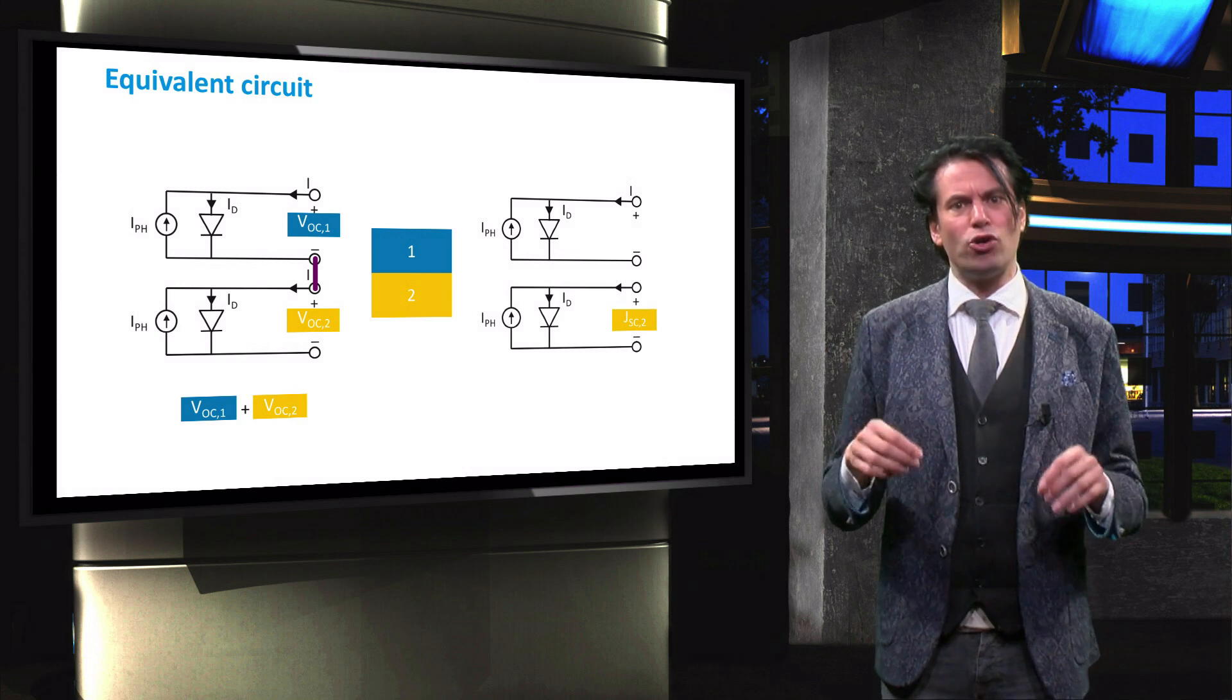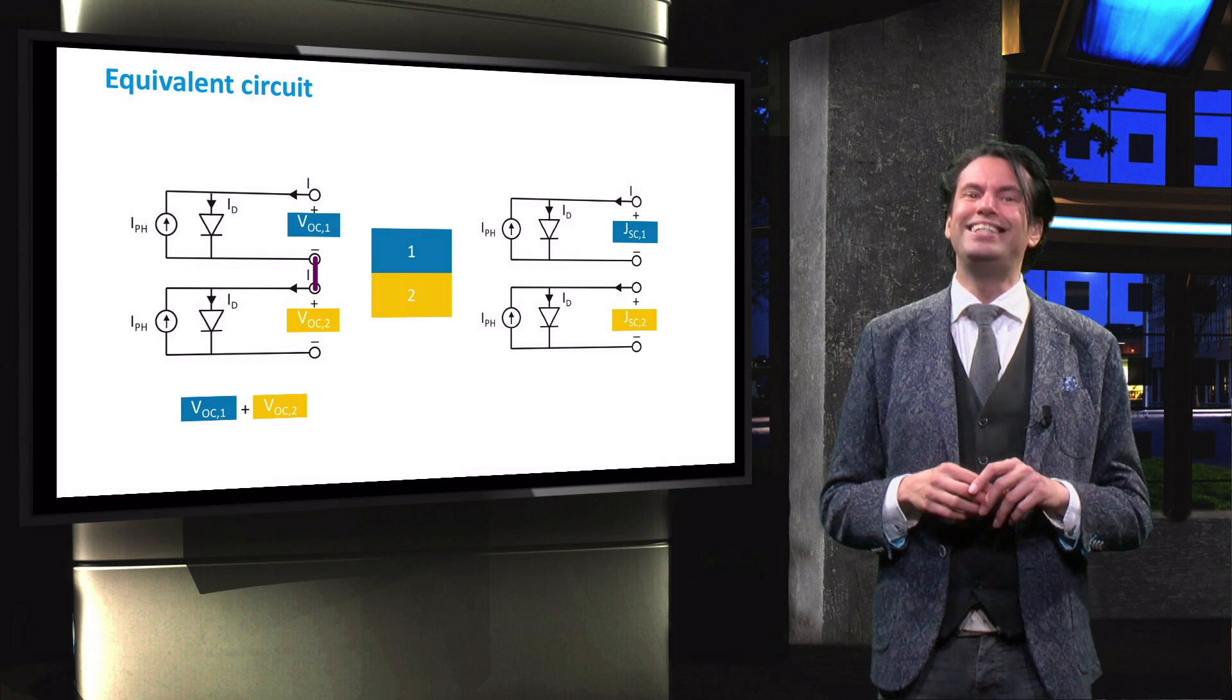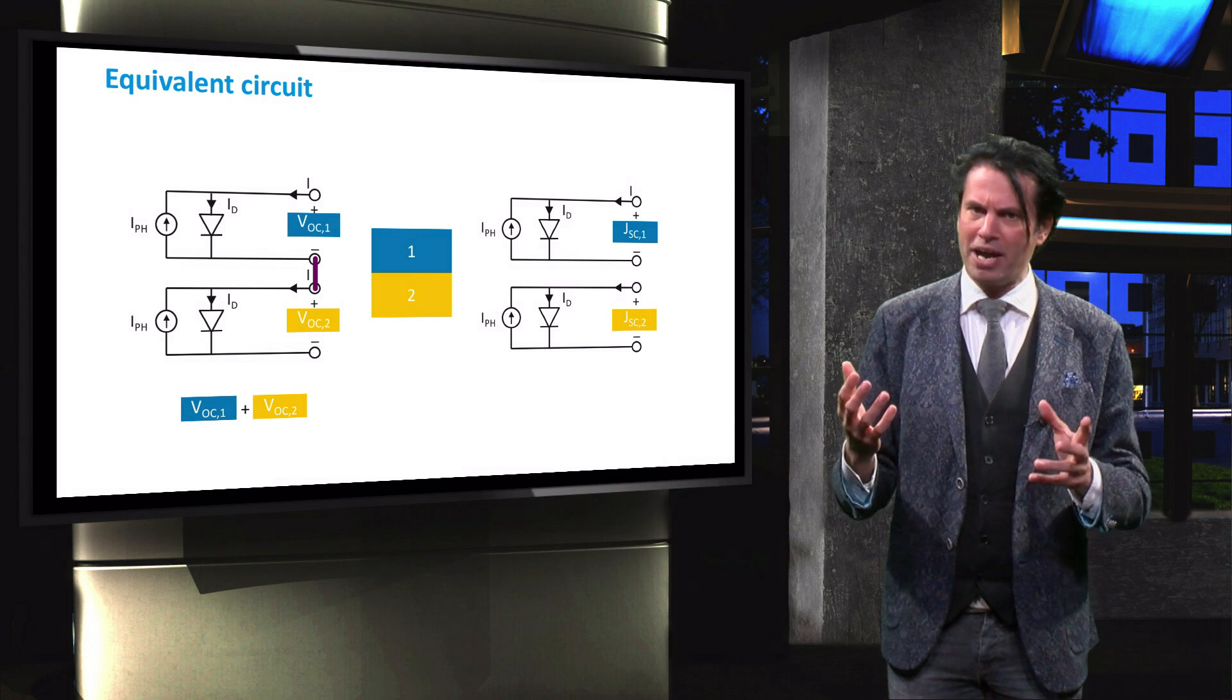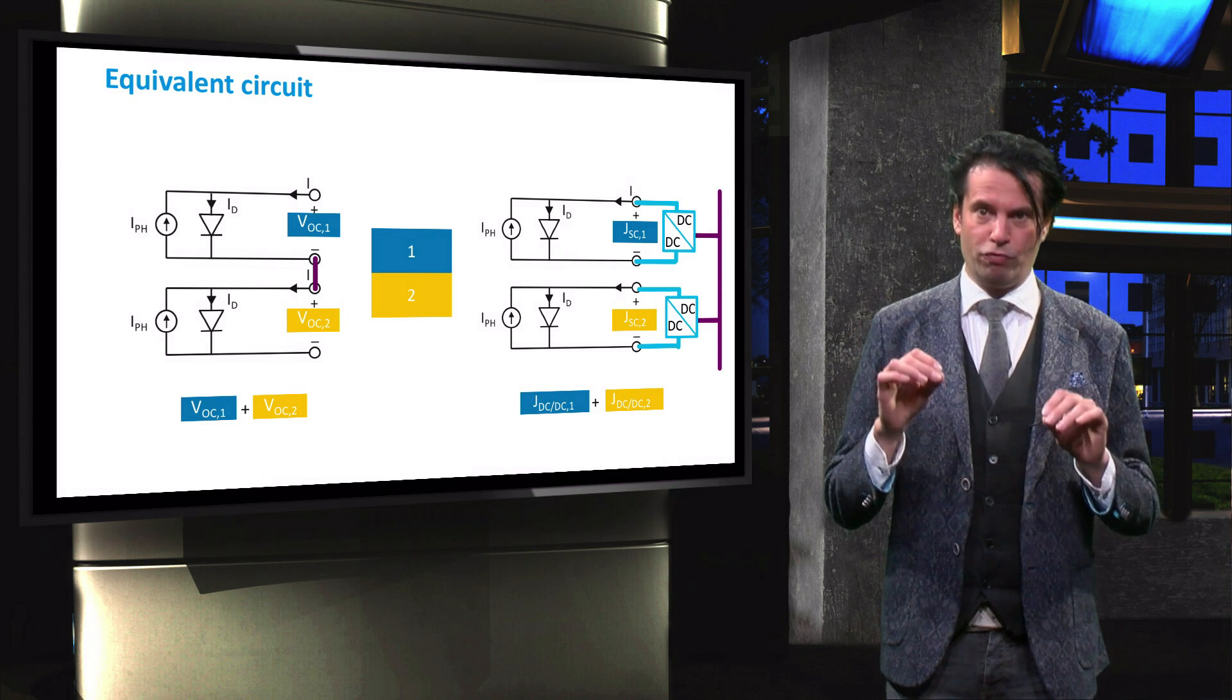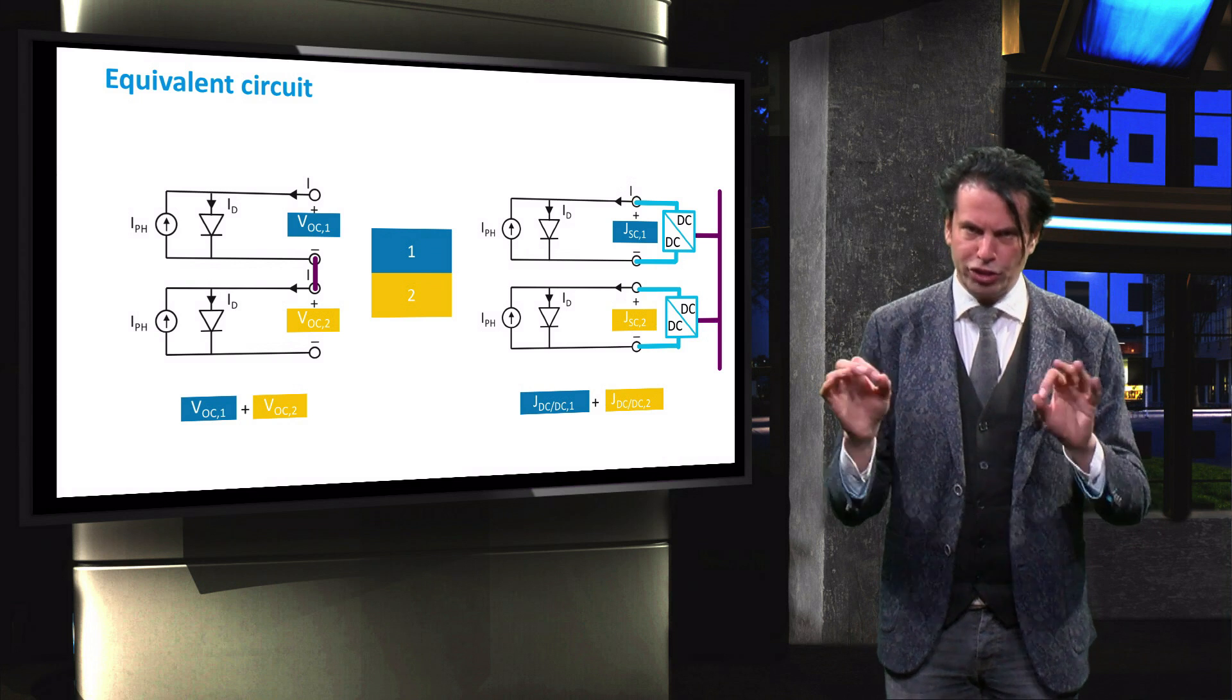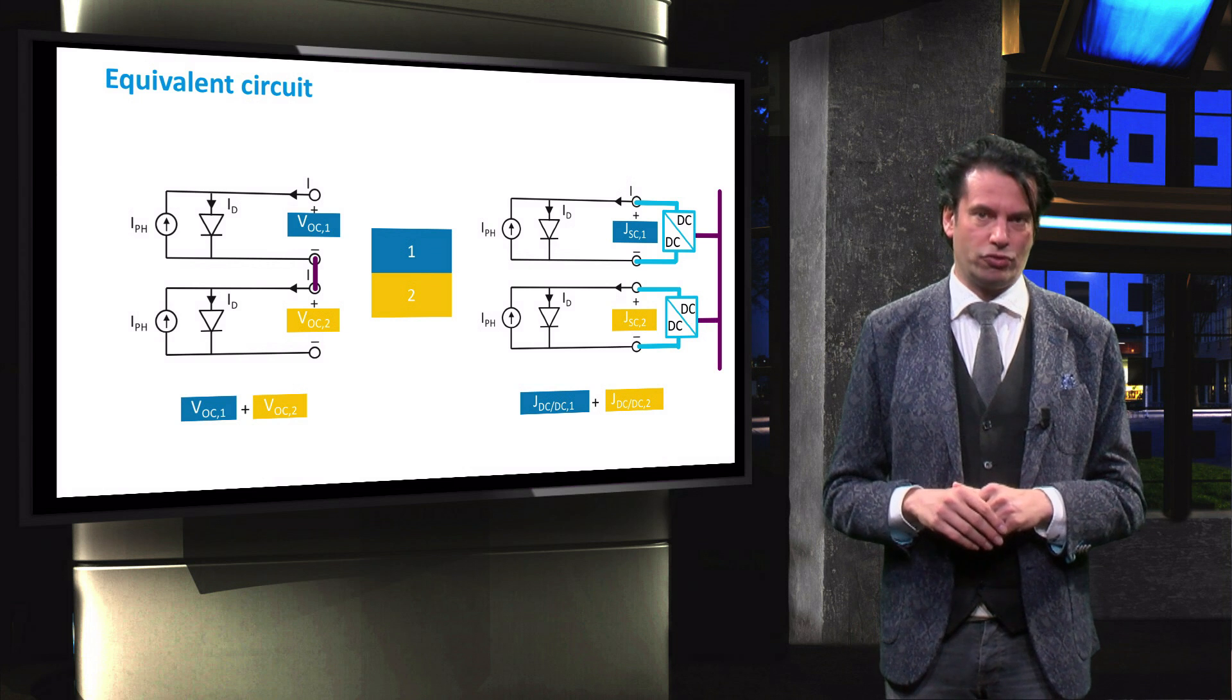However, these cells can also be mechanically stacked. To allow the subcells to be electrically interconnected, DC-DC converters at the back of the solar cells are required. These DC-DC converters convert the maximum power point voltage to one general nominal voltage, VDC, and the corresponding DC current for subcells 1 and 2. In such a four terminal configuration, the currents after the DC-DC conversion can be added up in a parallel connected configuration.